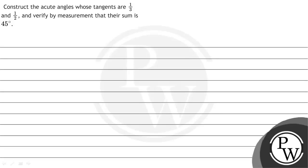Hello, let's read the given question. The question states: construct the acute angles whose tangents are 1/3 and 1/2, and verify by measurement that their sum is 45 degrees.